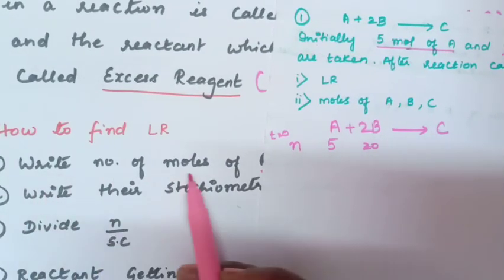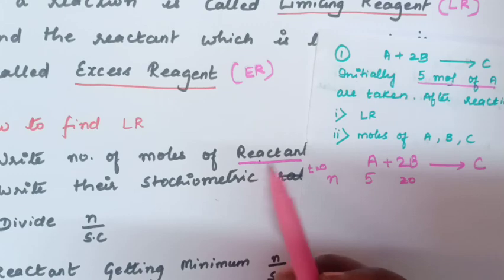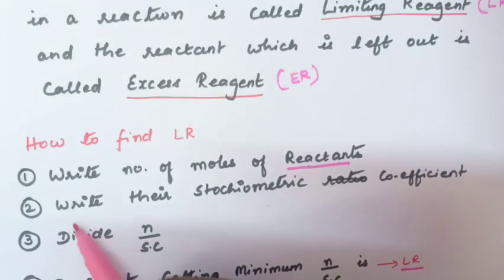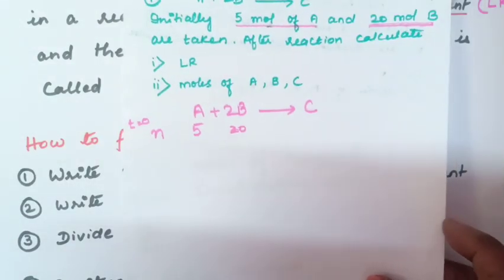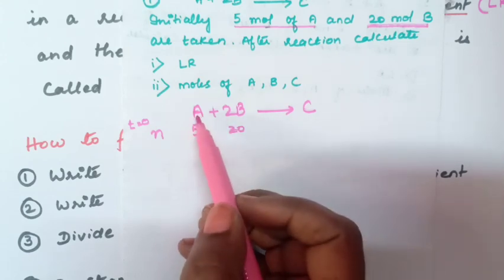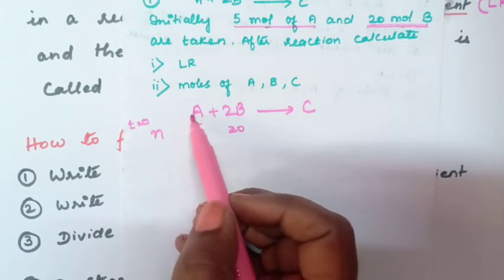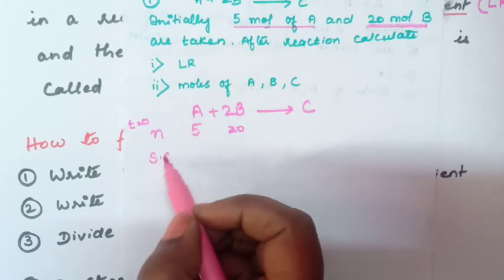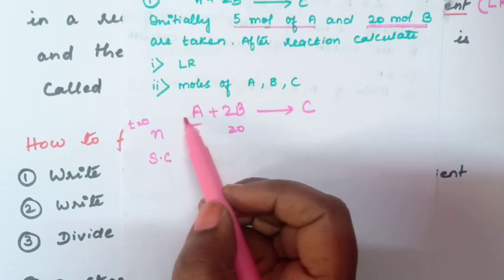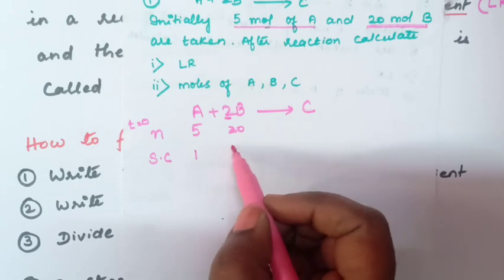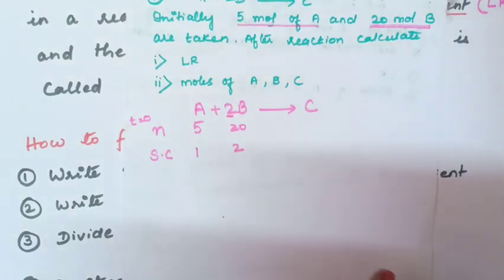Step 1: write the number of moles of the reactants — NA = 5, NB = 20. Step 2: write their stoichiometric coefficients. The stoichiometric coefficient for A is 1 (no number written means 1), and for B it is 2.